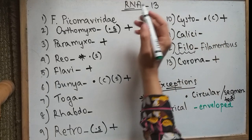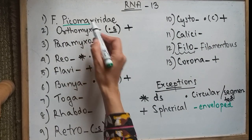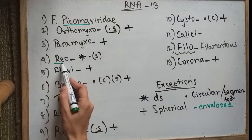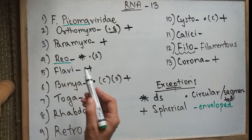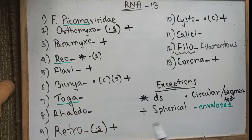Moving on to whether they're enveloped or not: Picorna, Reo, Toga, and Calici are not enveloped, and the rest are enveloped.